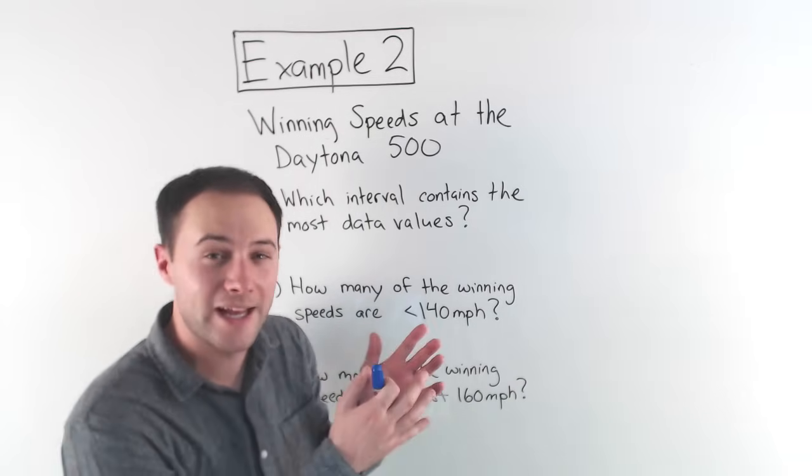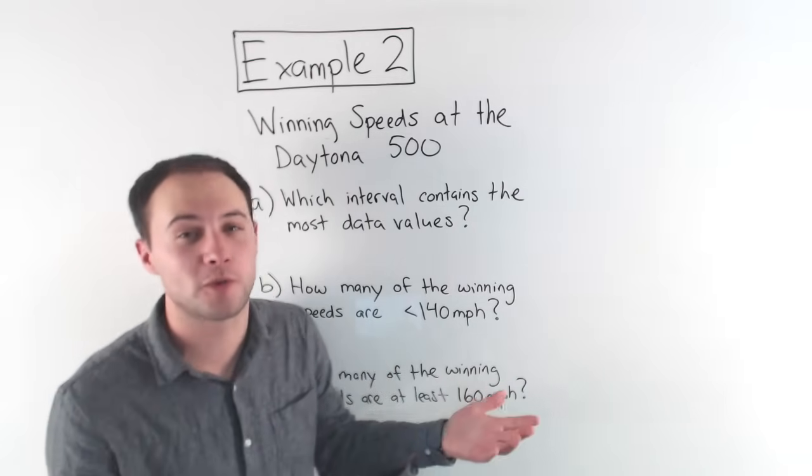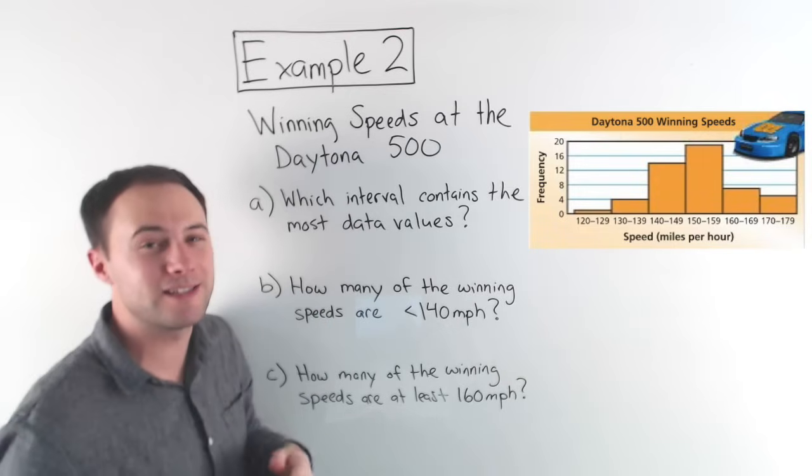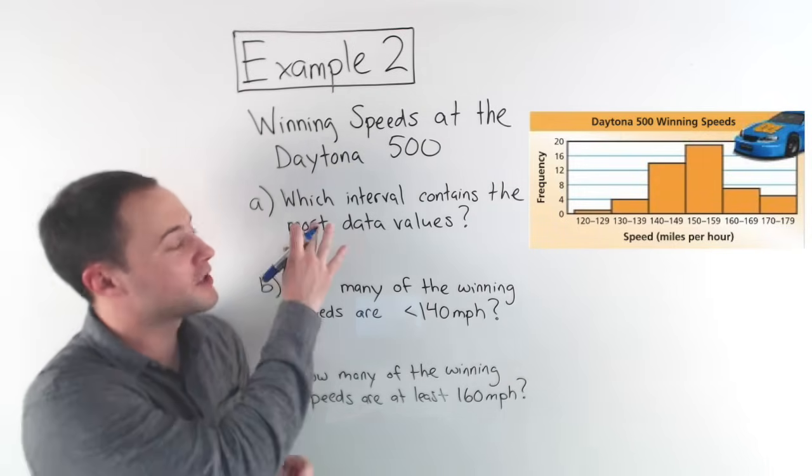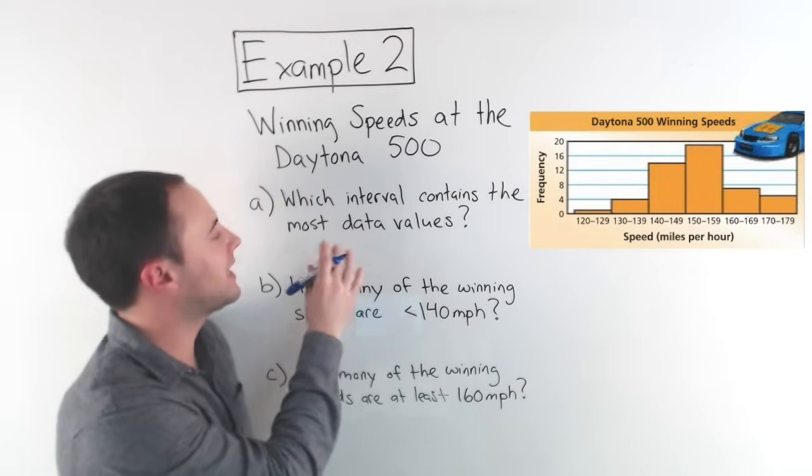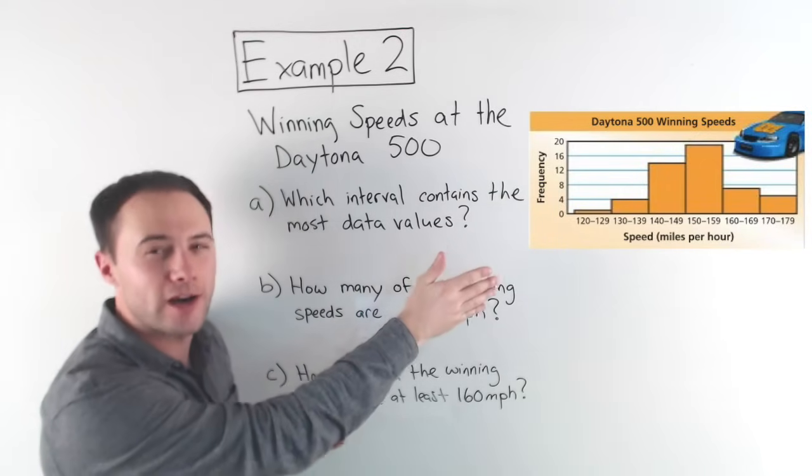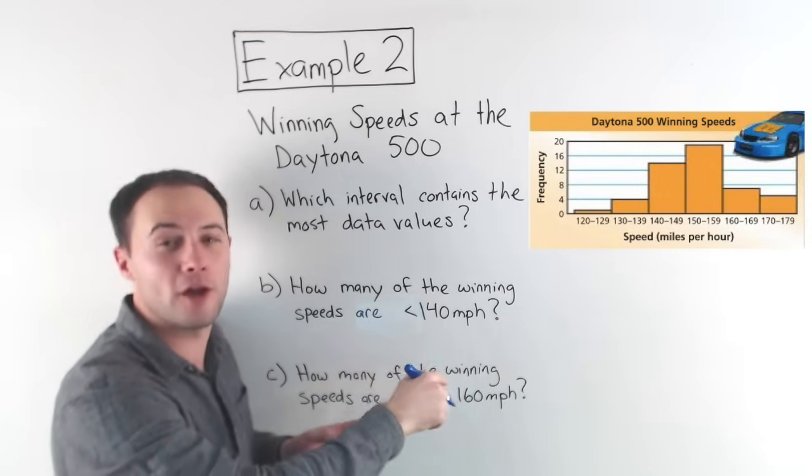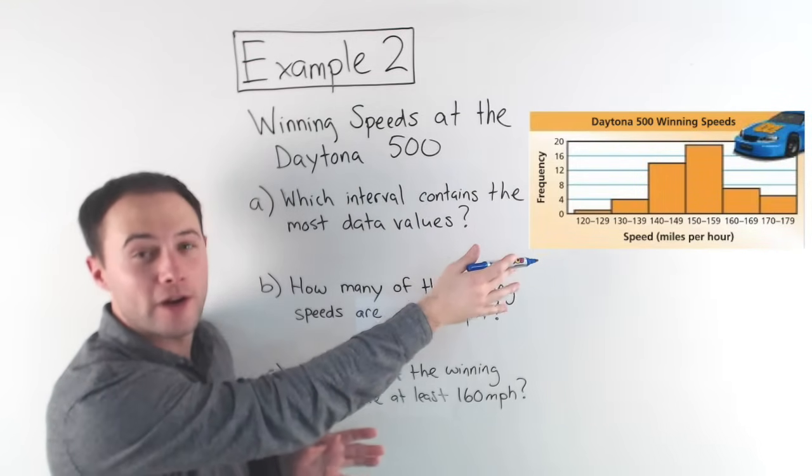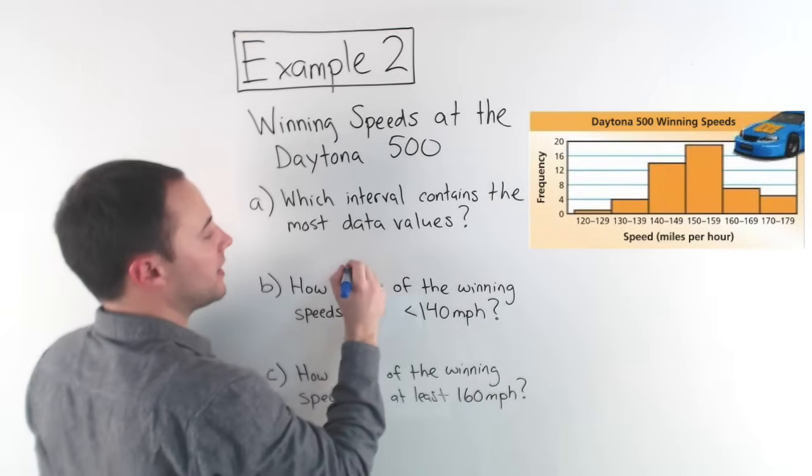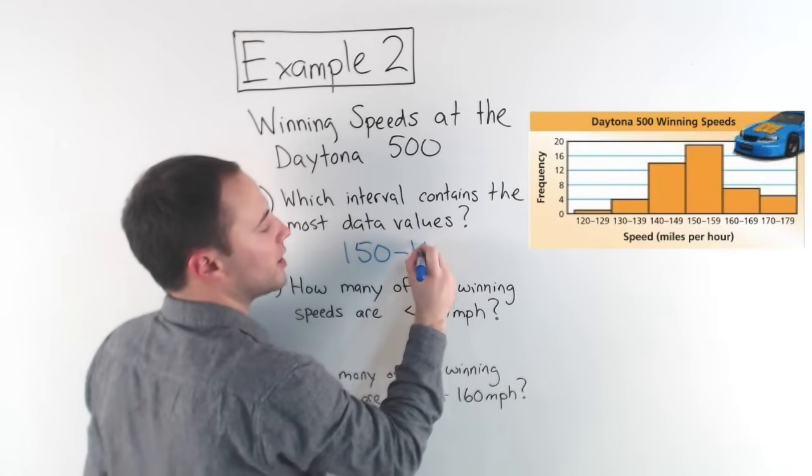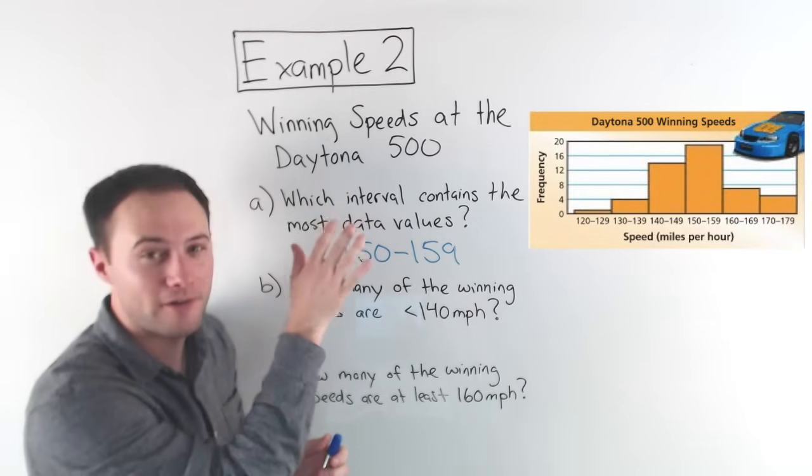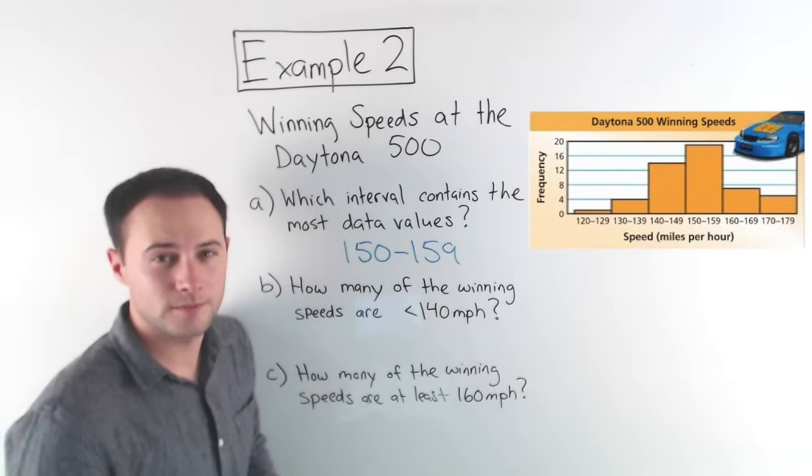Okay. Example two, instead of making a histogram, we're going to learn how to use one to answer three questions. So here is our histogram. It's about the winning speeds at the Daytona 500. So first question a, which interval contains the most data values? So if you look at our histogram here, remember the most amount of data values will be the bar that is the highest, the tallest. So if you look over here, which one is it? Well, you can see that it is the interval of 150 to 159 miles per hour. Most of the winning speeds for the Daytona 500 were within that interval.